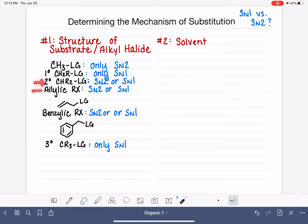If you have a secondary allylic or benzylic molecule undergoing substitution, these molecules are capable of either SN1 or SN2. In that case, we have to look at another factor or variable to help us choose if the reaction will be SN1 or SN2.